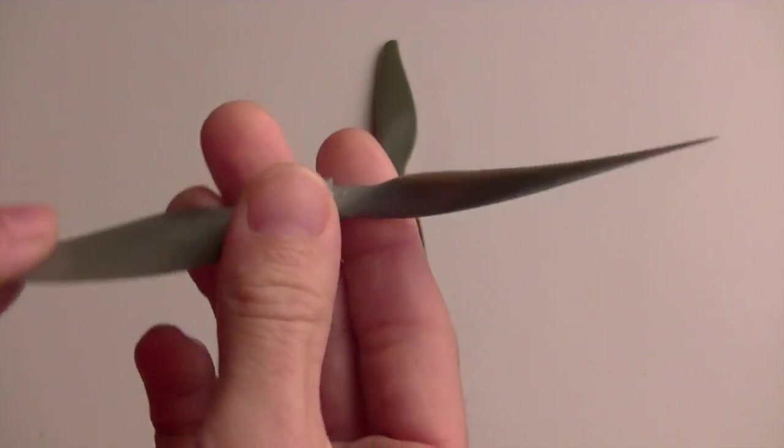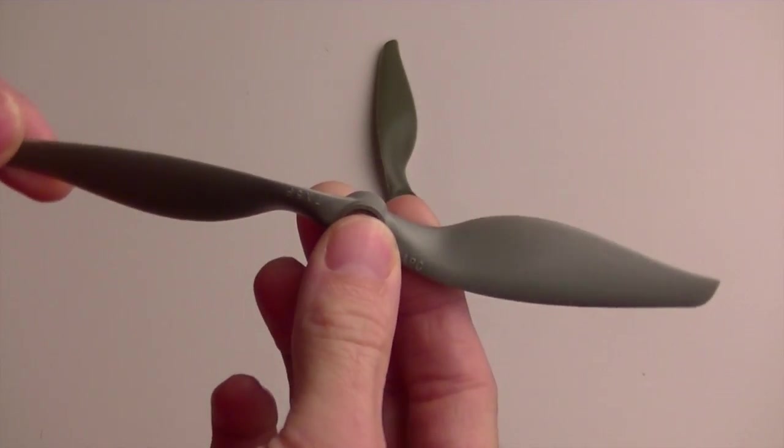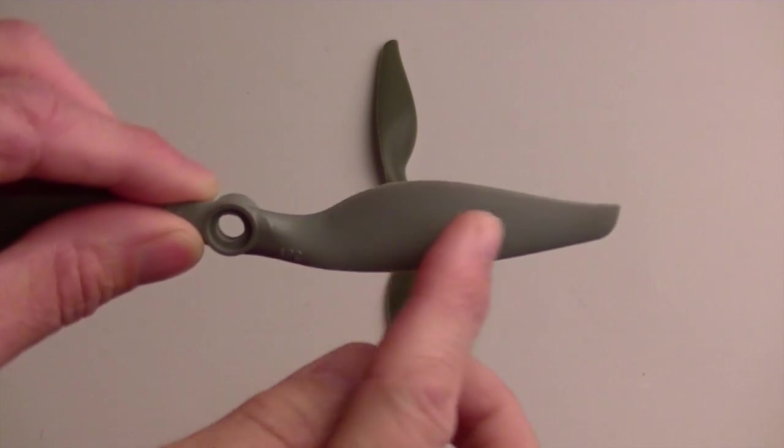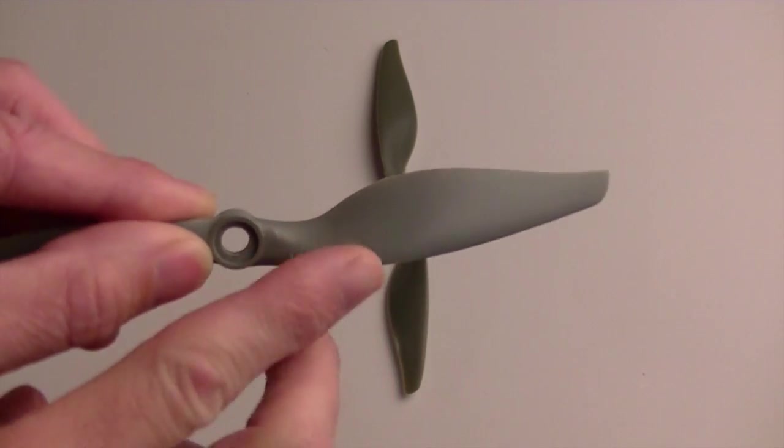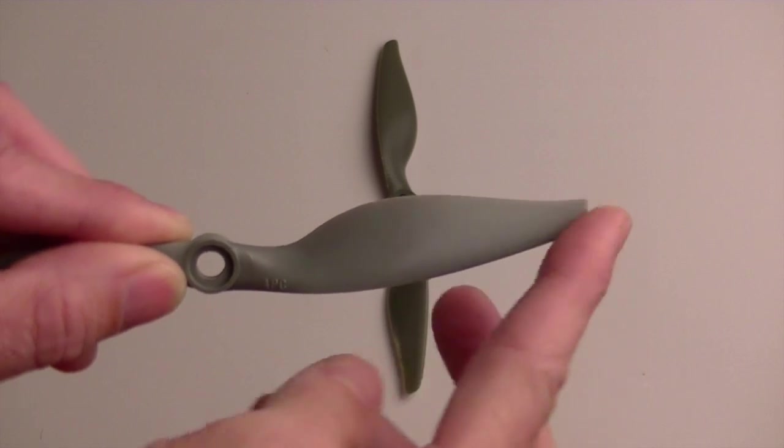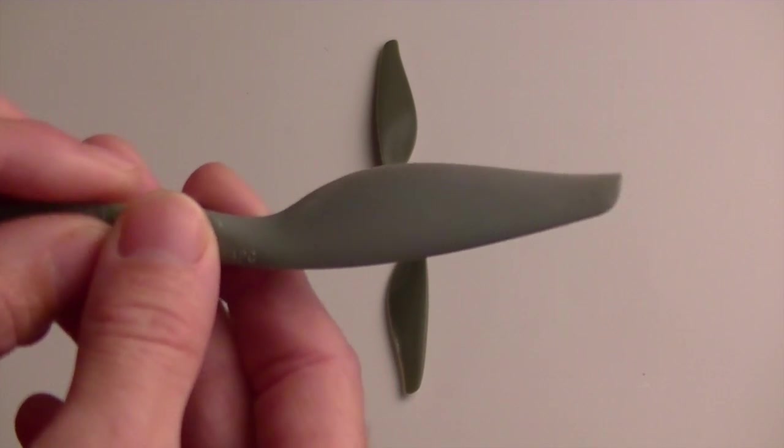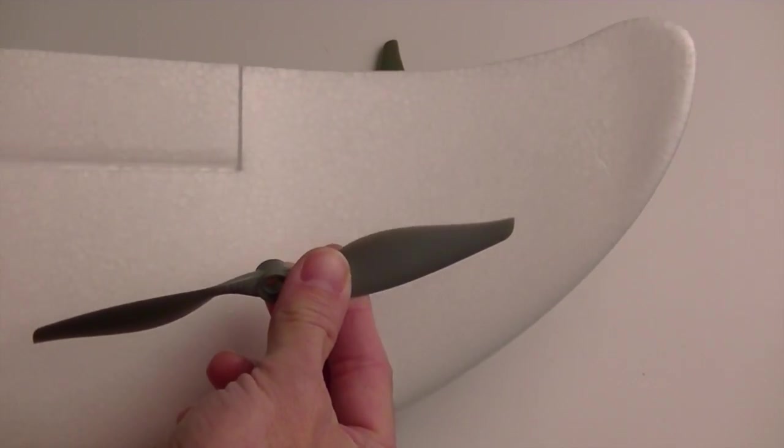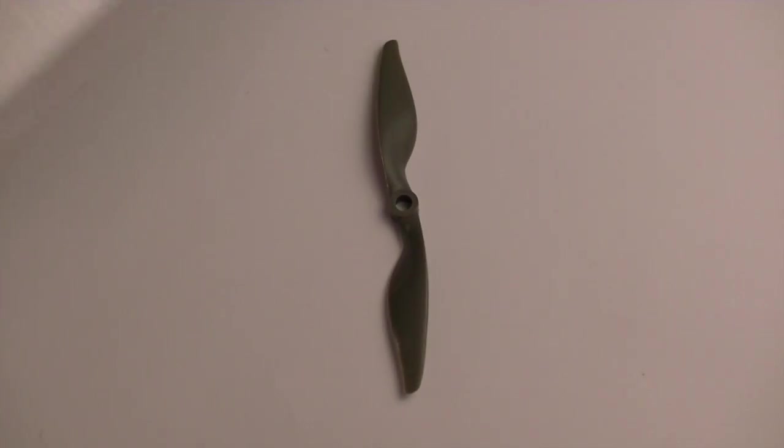All right, so now that we've talked about which way the propeller faces when it's installed on the plane, we need to talk a little bit about motor direction. Now if you look at this, it looks a lot like a wing, because that's really what it is. It's a little spinning wing. And just like on a wing of an airplane, there's a little bit of a swoop to it that you can see that swoops backwards. In fact, if you look at the Bixler wing, you'll notice a very similar swooping shape.